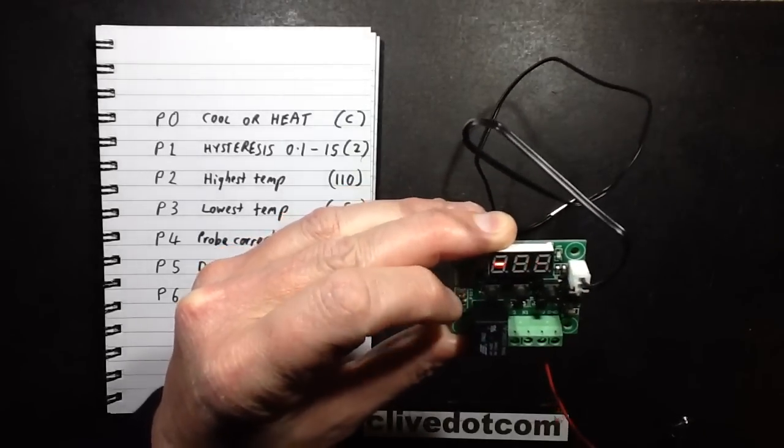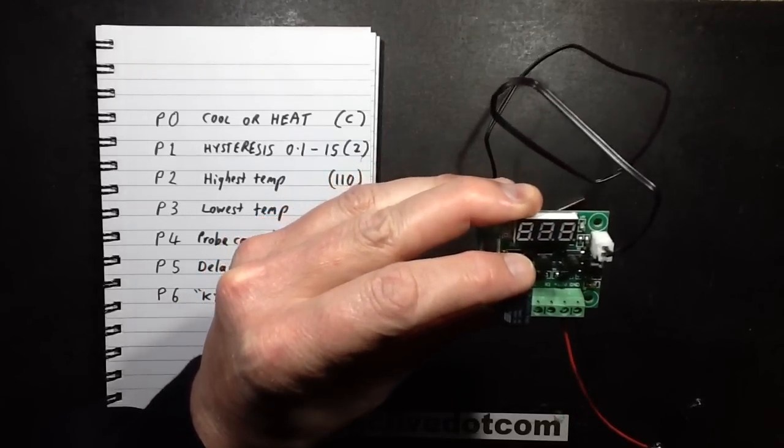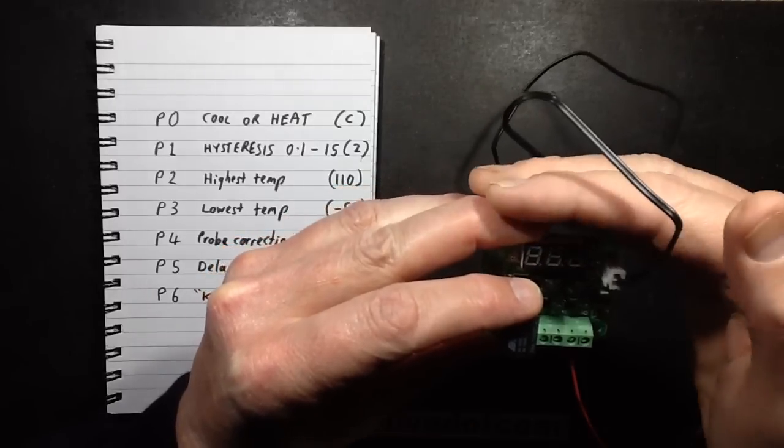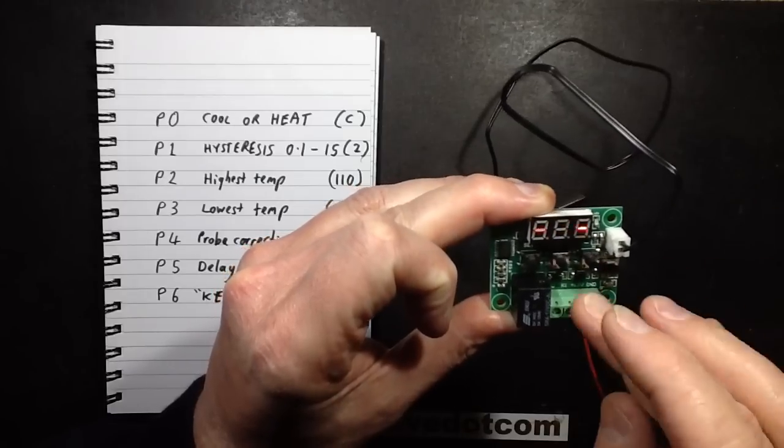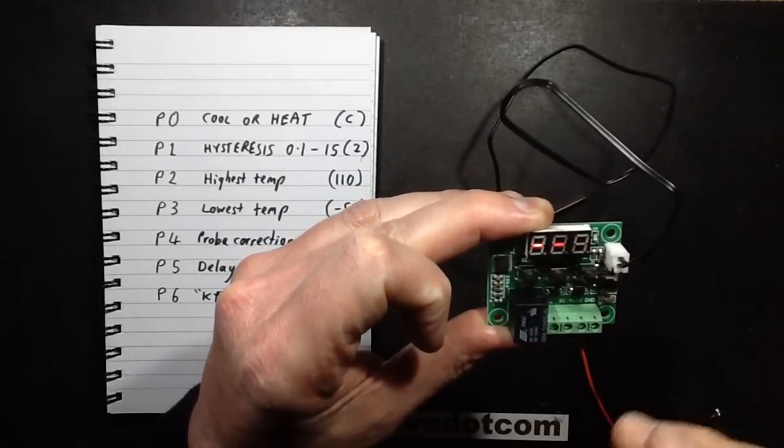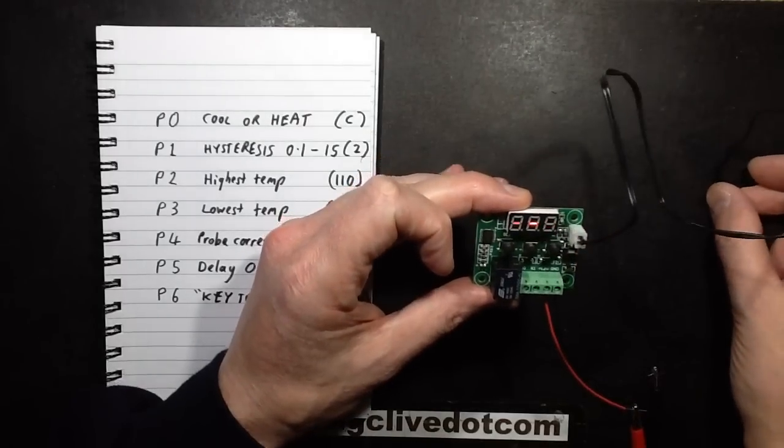And initially I found out if I turned it off and on again and held set, it would start displaying the flashing and I could adjust the parameter. Oh, there it goes. As soon as you touch a button, it just locks out again. And I thought, oh, that's not very good. I've completely bricked it.